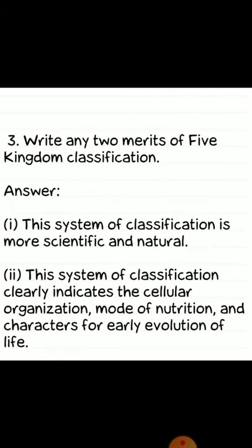Third question: write any two merits of five kingdom classification. Answer: first, the system of classification is more scientific and natural. Second, this system clearly indicates the cellular organization, mode of nutrition and characters for the early evolution of life.